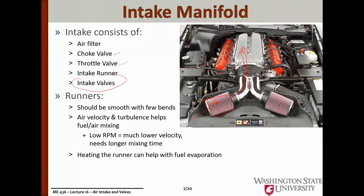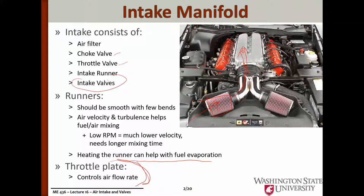One thing that can help in a carbureted engine with mixing fuel and air, and preventing the carbureted fuel from becoming a sheen of fuel on the wall of the runner dripping into the engine and no longer being properly mixed, is runner temperature. The higher temperature we can get the runner, the more we'll evaporate that fuel into the incoming air and help with mixing. The throttle plate is the main feature which changes with the power output of the engine — it controls how much air we're sucking in on every revolution.